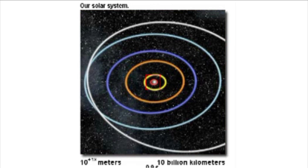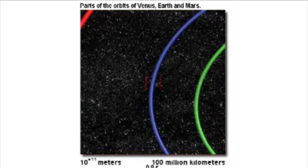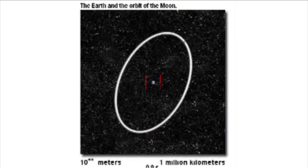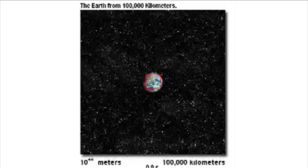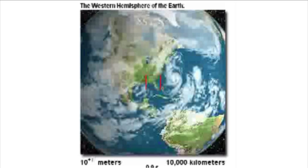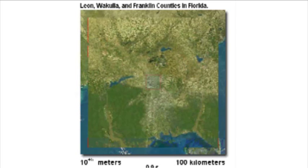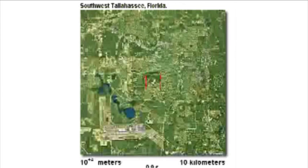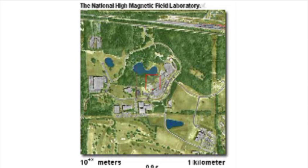Orbits of Mercury, Venus, Earth, Mars and Jupiter. Parts of the orbits of Venus, Earth and Mars. The Earth and the orbit of the Moon. The Earth from 100,000 kilometers. The Western Hemisphere of the Earth. Southeastern United States. Leon, Wakula and Franklin Counties in Florida. Southwest Tallahassee, Florida. The National High Magnetic Field Laboratory. Nearby trees, the lake and the laboratory roof.